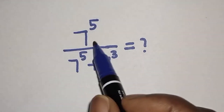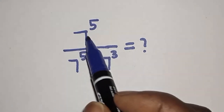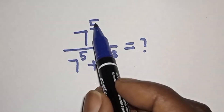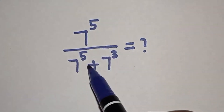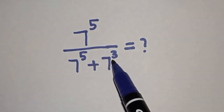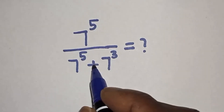Hello, in this class, we quickly want to simplify this nice math problem: 7 raised to power 5 divided by 7 raised to power 5 plus 7 raised to power 3 is equal to what?